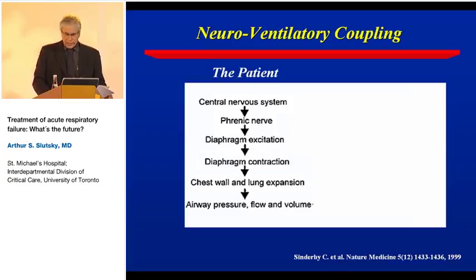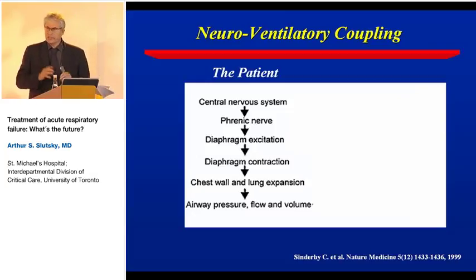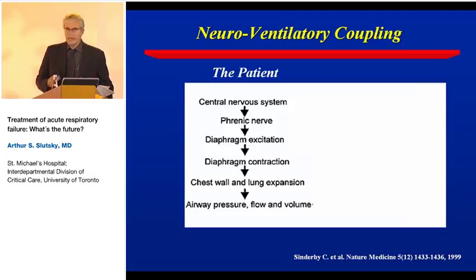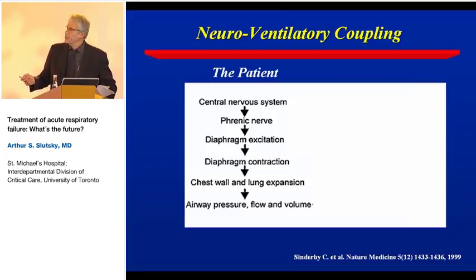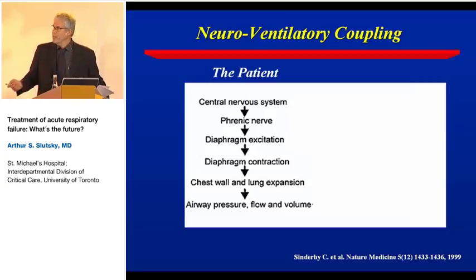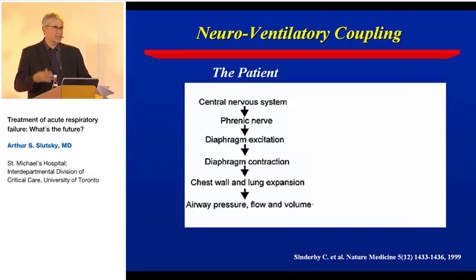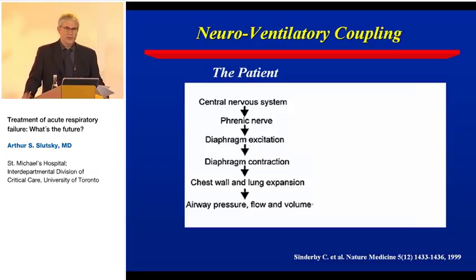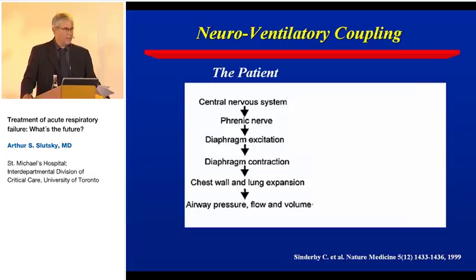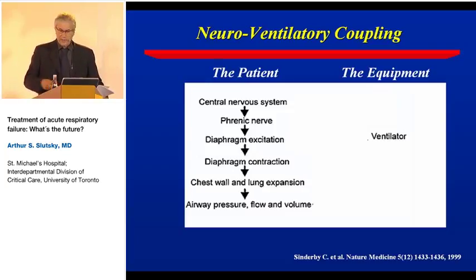Let's look at patient-ventilator interactions. First, let me frame the problem: we have a patient who is breathing or trying to breathe. A signal is sent from the central nervous system, travels down the phrenic nerve, activates the diaphragm, causes contraction, changes in the chest wall, and lung expansion — generating pressure, flow, and changes in volume.